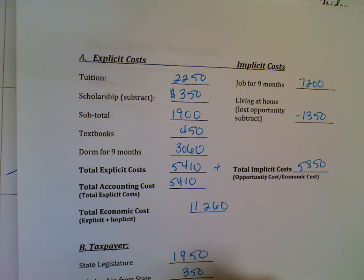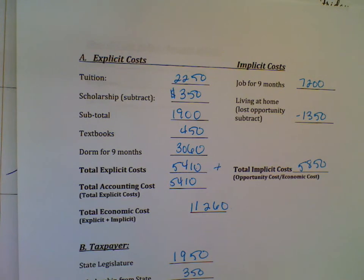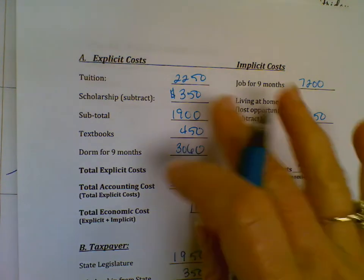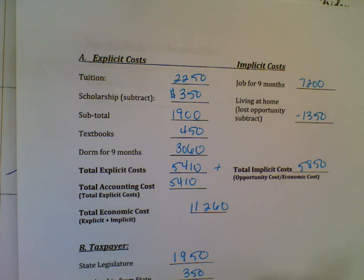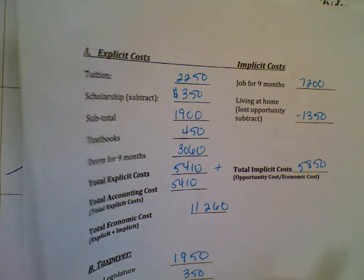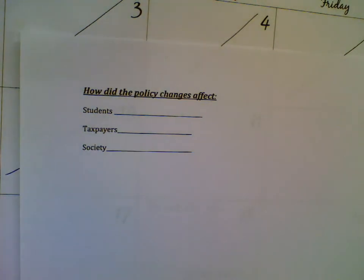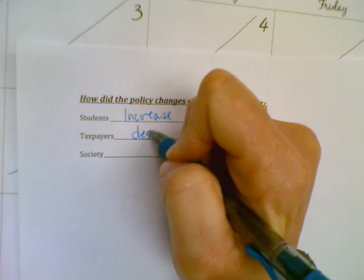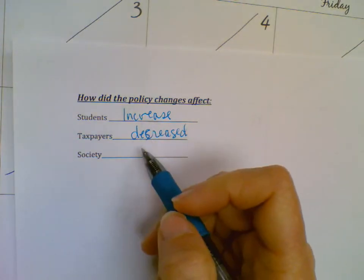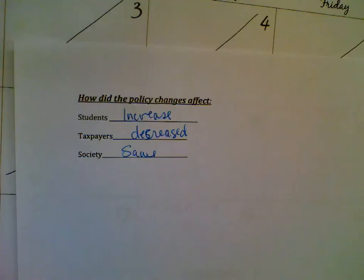On the taxpayer side, the budget for faculty and salaries decreased to $1,950, and the scholarship dropped from $500 to $350, bringing total taxpayer cost down to $2,300. Alumni still contribute $250. So the total cost to society remains $13,810 — the same as before. The only thing that changed is we shifted the burden: less falls on the taxpayer and more falls on the individual student. These shifts can absolutely happen depending on who is elected and what education funding policies are in place.